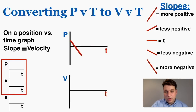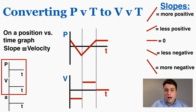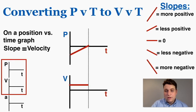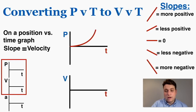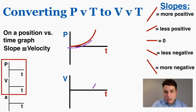Now that you understand how to work with straight-line position graphs, let's talk about curved position graphs. On a curved position graph, we want to know what the slope is doing at each moment. A trick I strongly encourage is drawing tangent lines along the graph — you draw straight lines that imitate what the slope is doing at each point. This helps you visualize what the velocity is doing.